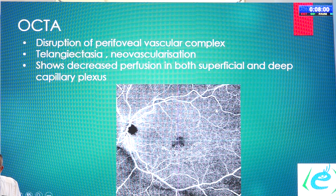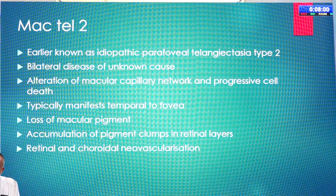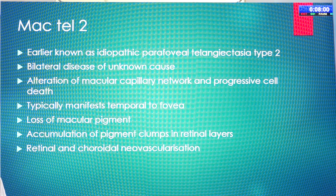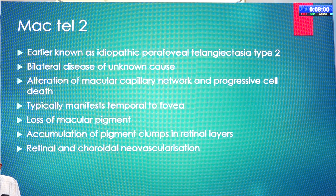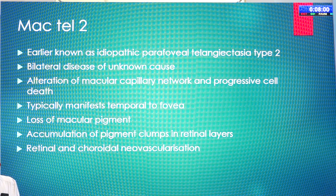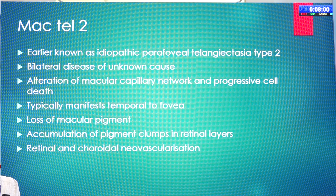OCTA shows disruption of the perifoveal vascular complex — we can see telangiectasia and neovascularization if it develops, with decreased perfusion in both superficial and deep capillary plexus. Coming to MacTel Type 2, earlier known as idiopathic parafoveal telangiectasia type 2 (type 1 being Coats' disease), this is a bilateral disease of unknown cause with alteration of the macular capillary network and progressive cell death. It typically manifests temporal to the fovea, with loss of macular pigment, accumulation of pigment clumps in retinal layers, and retinal and choroidal neovascularization.